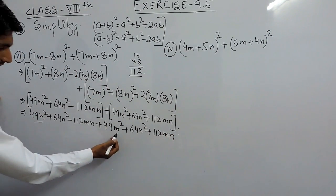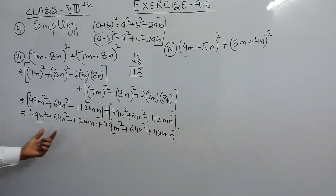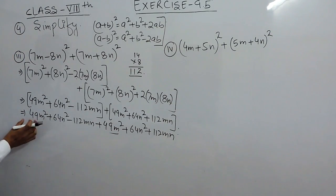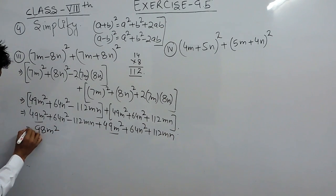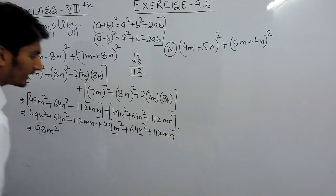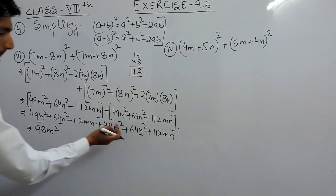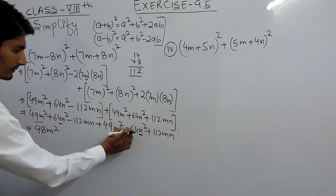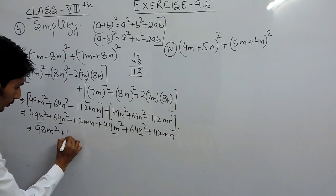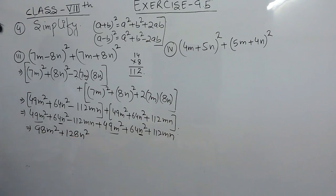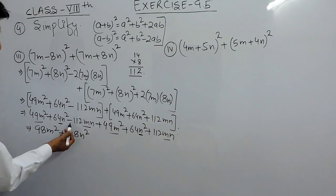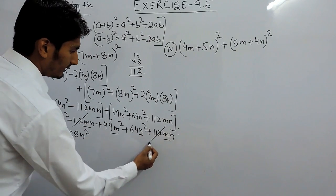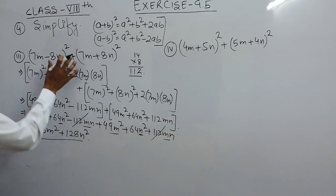Now the two expressions are similar so we combine like terms. 49m² + 49m² = 98m²; 64n² + 64n² = 128n²; and -112mn + 112mn cancel out. So the final answer for this expression is 98m² + 128n².